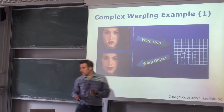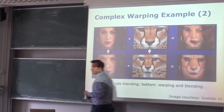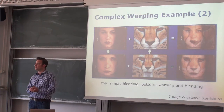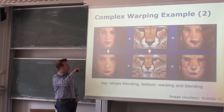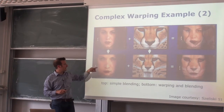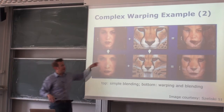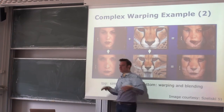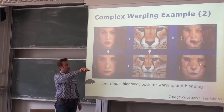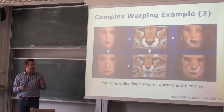The same technique is used for more complex warping, such as warping a person's face onto an animal. We have the original image and a direct overlay would look blurry or misaligned. But by marking the locations of the eye, nose, and mouth, and interpolating between them so they meet in the middle, we can do a proper warping — used for example in videos where one person's face blends into another person's face.